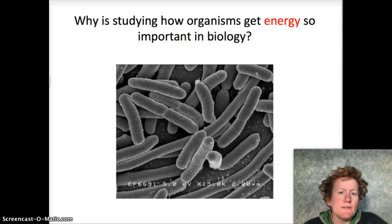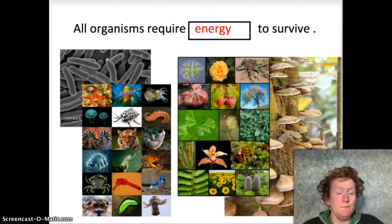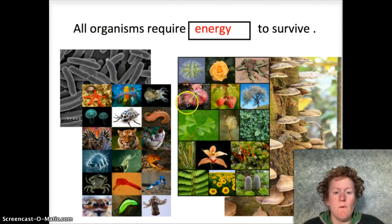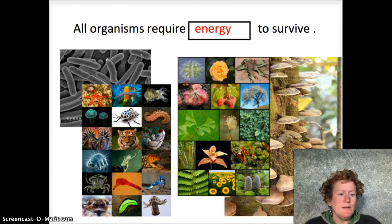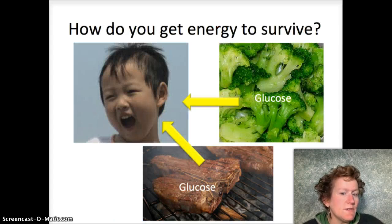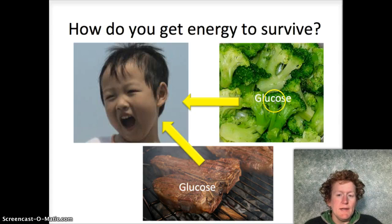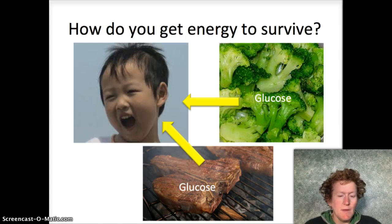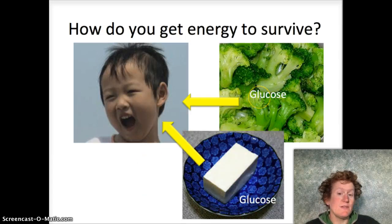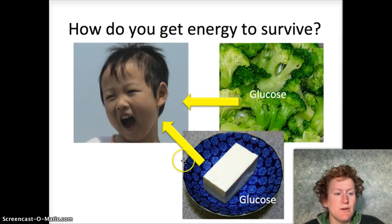Studying how organisms get energy is very important in biology because all organisms require energy to survive. Whether you're an insect, a bacteria, a plant, or a fungi, you need energy. How do you get energy to survive? You intake the sugar glucose — we talked about that in unit 2 — and you get that from eating plants or eating animals that have eaten plants. Or if you're a vegetarian, you just get it from eating plants.